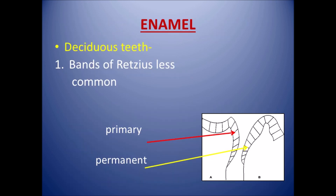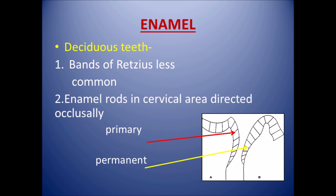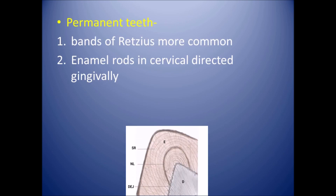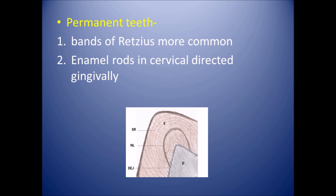Moving on to enamel, deciduous teeth have bands of ridges which are less common as compared to permanent dentition. Enamel rods in the cervical area are directed occlusally in deciduous teeth, but this is not present in permanent teeth — in permanent teeth, the enamel rods at the cervical area are directed gingivally. Bands of ridges are more common in permanent teeth.